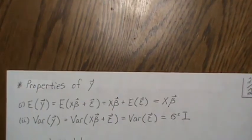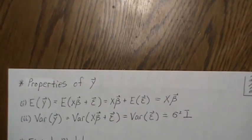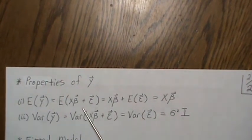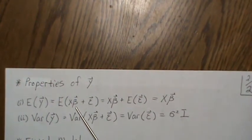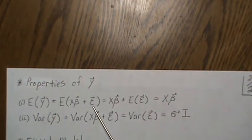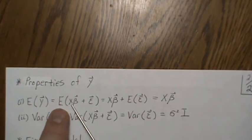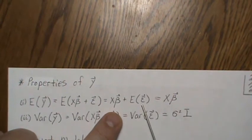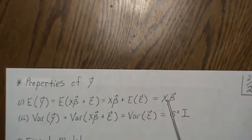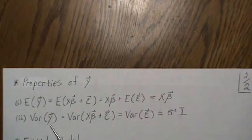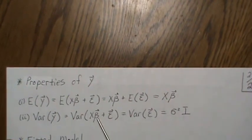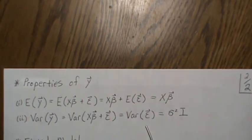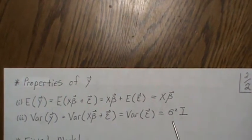Now the properties of Y — and I probably should have put this first. The mean value of Y: plugging in what Y is, which is X beta plus epsilon, X beta is constant so the expectation applies only to epsilon. The expected value of epsilon is zero, so we get X beta. The variance of Y: X beta is constant so it doesn't contribute to the variance, leaving just the variance of epsilon, which is sigma squared I.